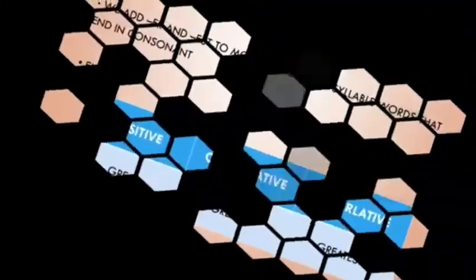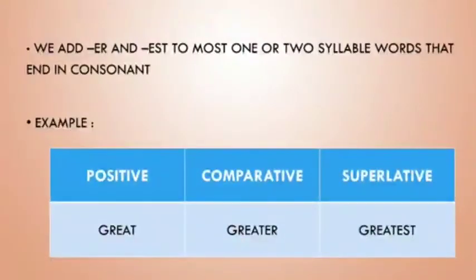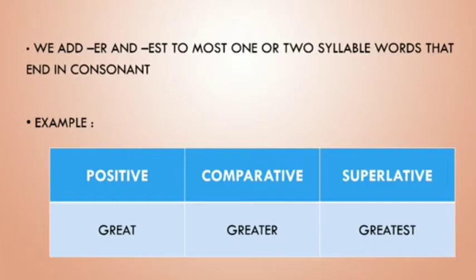The first rule: we add -er and -est to most one or two syllable words that end in a consonant. For example, the word 'great' is a one-syllable word that ends in a consonant. To change it into comparative and superlative, we add -er and -est. So it becomes 'greater' and 'greatest'.